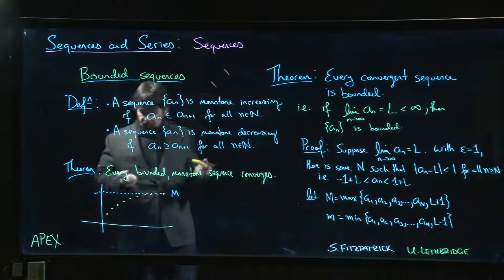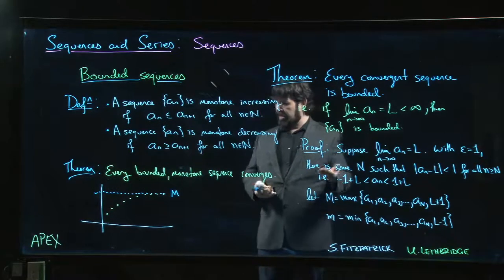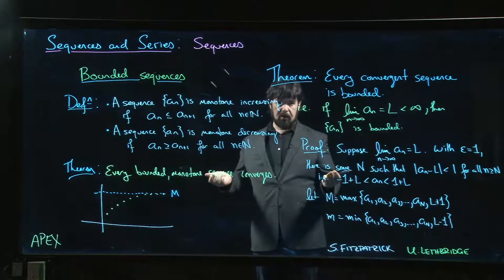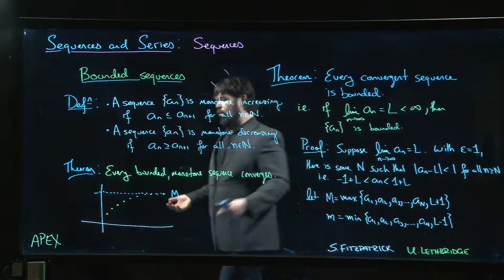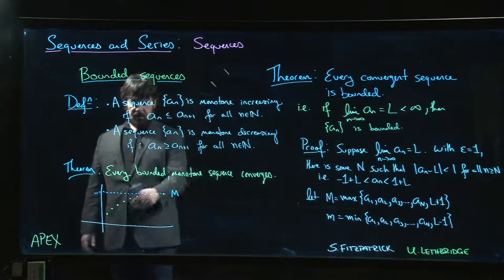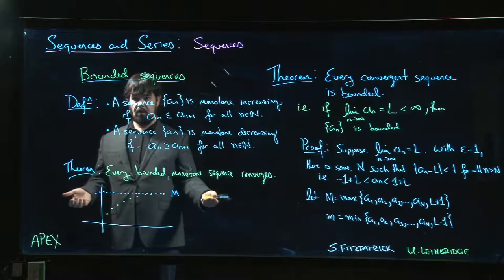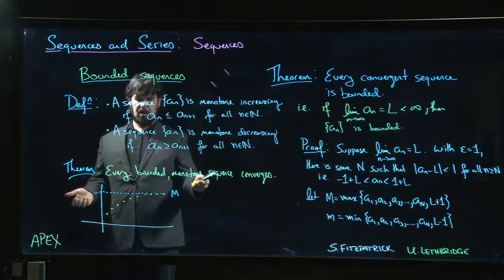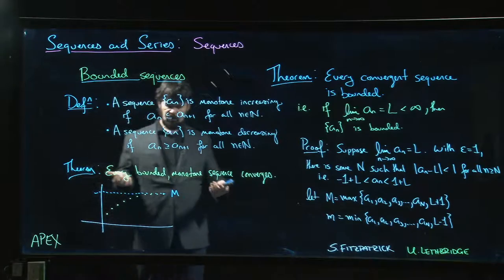The idea here is that one of the properties the real numbers have is that any sequence that is bounded above has a least upper bound. So basically, you would say, here's a sequence of numbers that's bounded above. We look for the least upper bound, and you can prove that that least upper bound has to be the limit. But then you've got to get into this discussion of least upper bound properties.